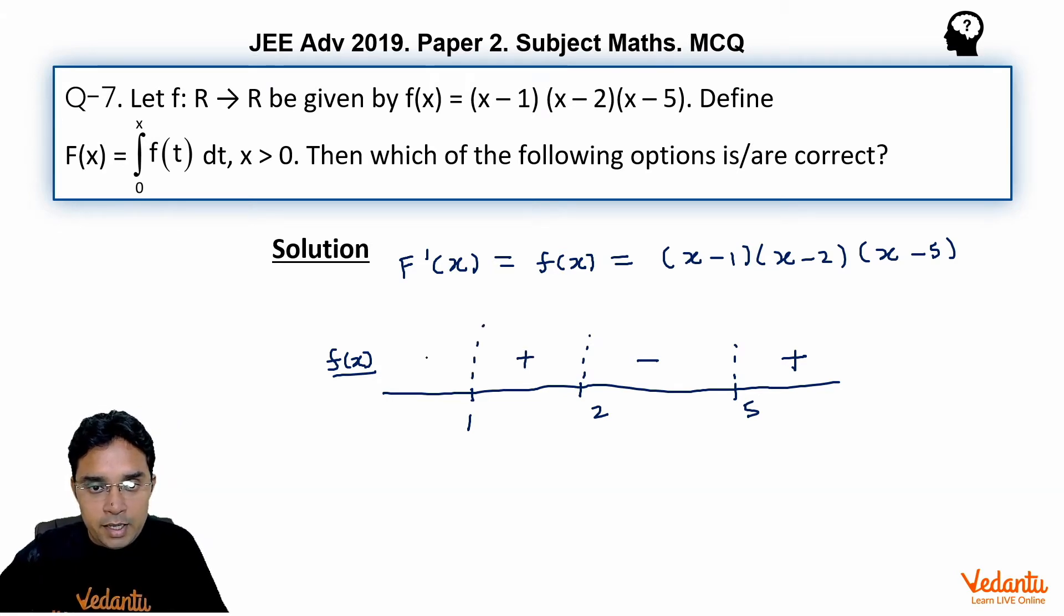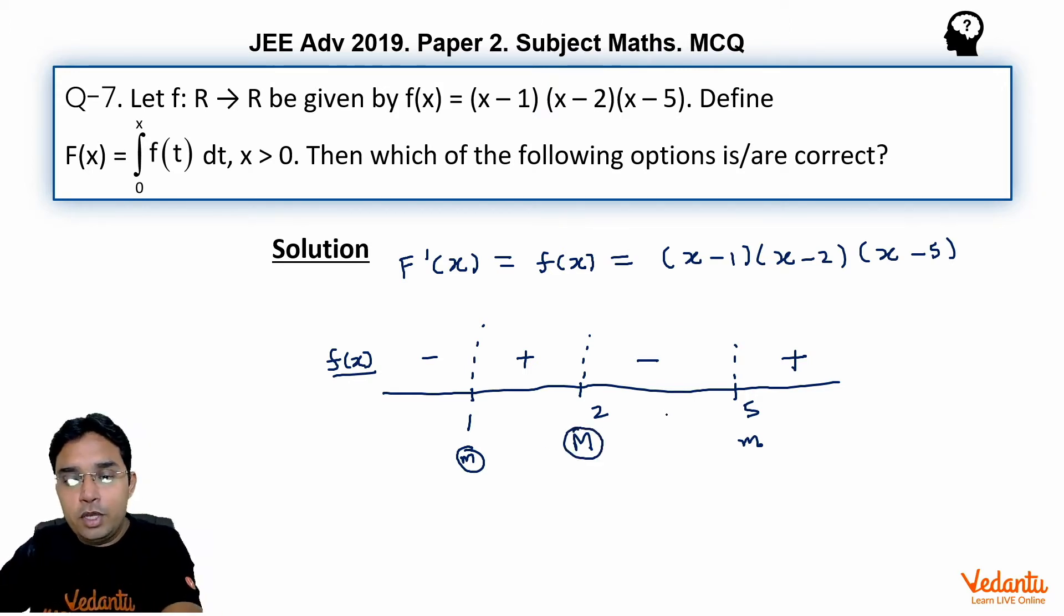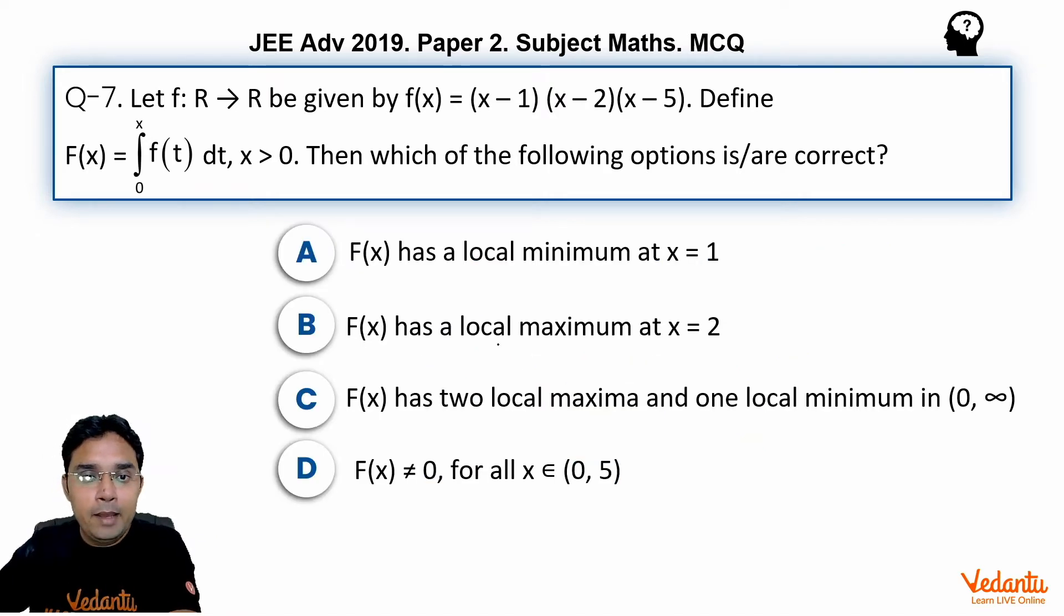So on right of 5 it will be positive, then negative between 2 and 5, then positive between 1 and 2, and then negative before 1. That means at 1 it should be minima, at 2 it should be maxima, at 5 it should be minima, because sign change for minima should be from negative to positive, for maxima it should be from positive to negative.